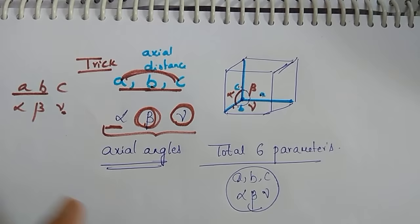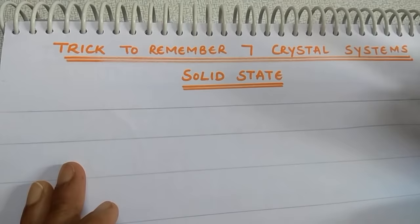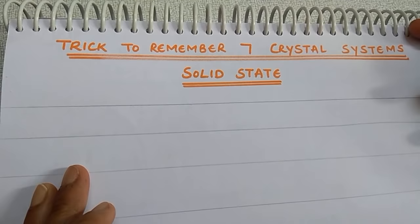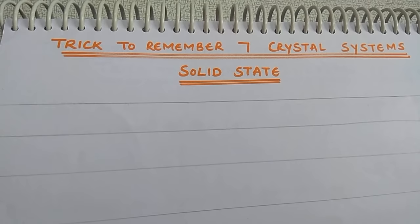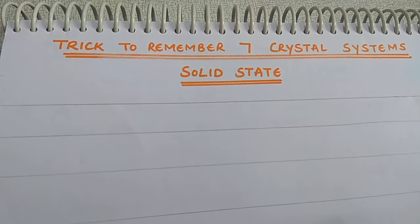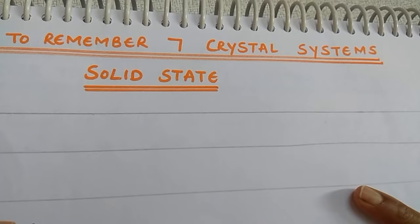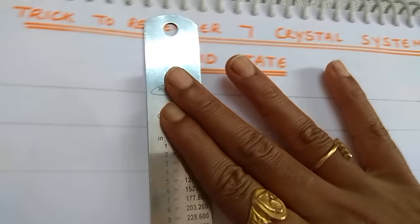What are those seven crystal systems? They include the cubic crystal system, tetragonal crystal system, orthorhombic system, and others. If you observe your NCERT textbook or college material, you may find it difficult to remember all seven. This video will make the concept easier.